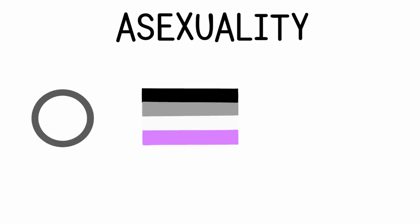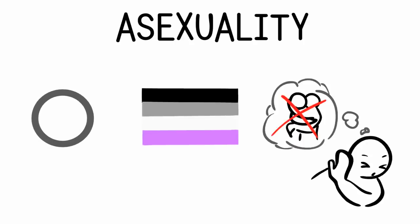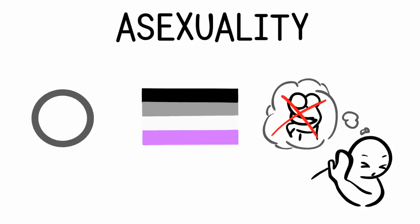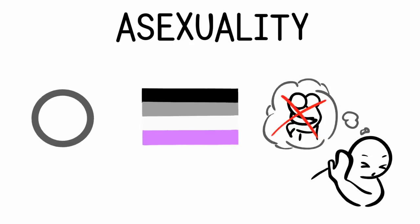6. Asexuality. Asexuality is one of the lesser-known sexualities. It refers to someone who doesn't experience sexual attraction to any gender. This doesn't mean, however, that they never have relationships or sex, which are common myths about asexuality. BoJack Horseman, the TV show, explores asexuality through one of the major characters, Todd Chavez.